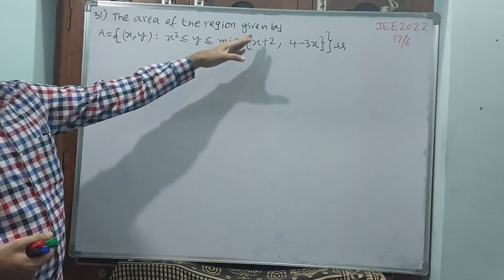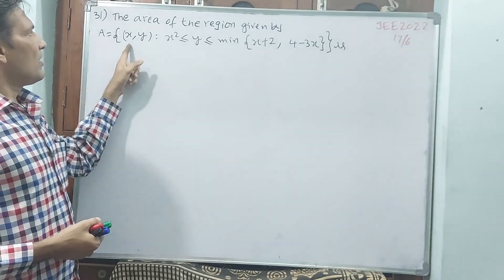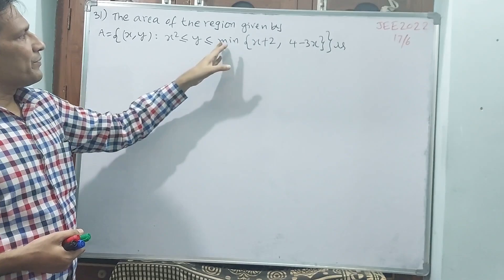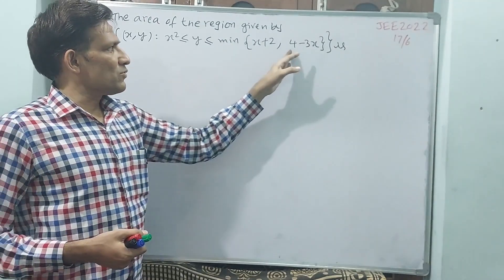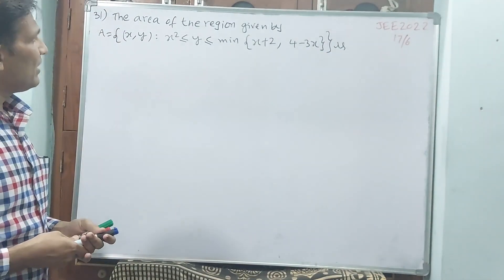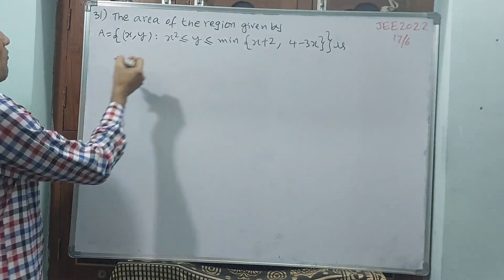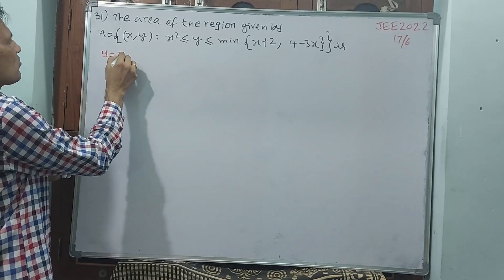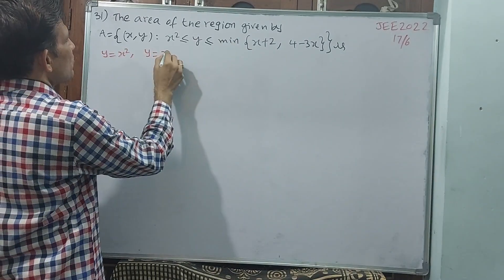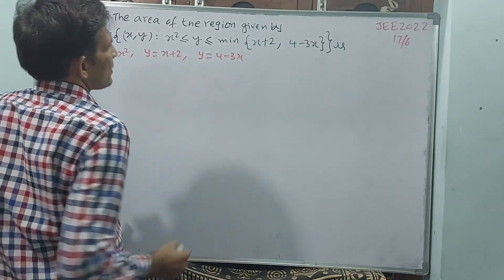The area of the region A is defined for all (x, y) such that y is greater than or equal to x², and y is less than or equal to the minimum of (x+2) and (4−3x).